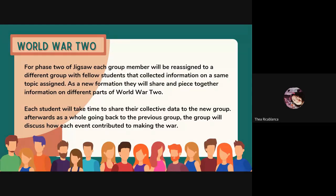We have another example for six members using the topic of forms of government: number one, democracy; number two, dictatorship; number three, monarchy; number four, republic; number five, totalitarianism; and number six, theocracy. That will be all for the sample activity, and I will now pass to Miss Frances Kading Lassa.